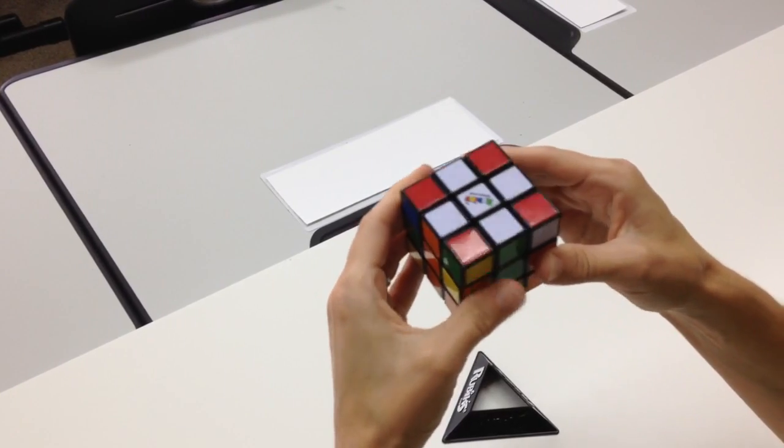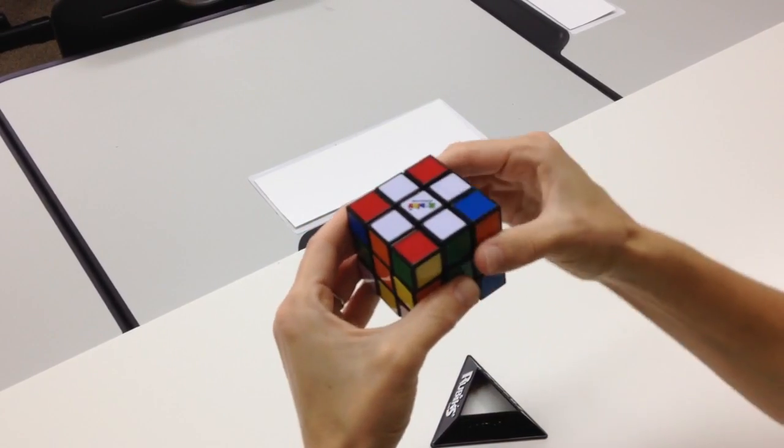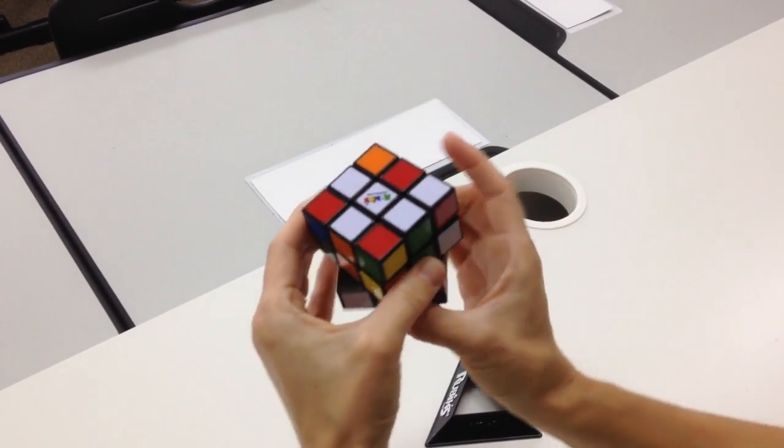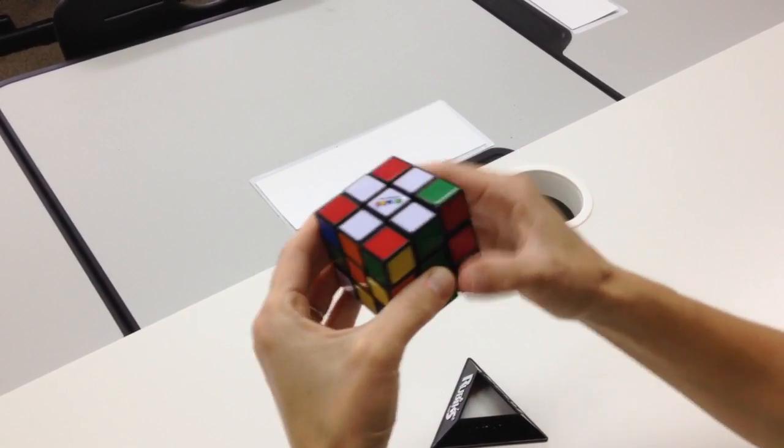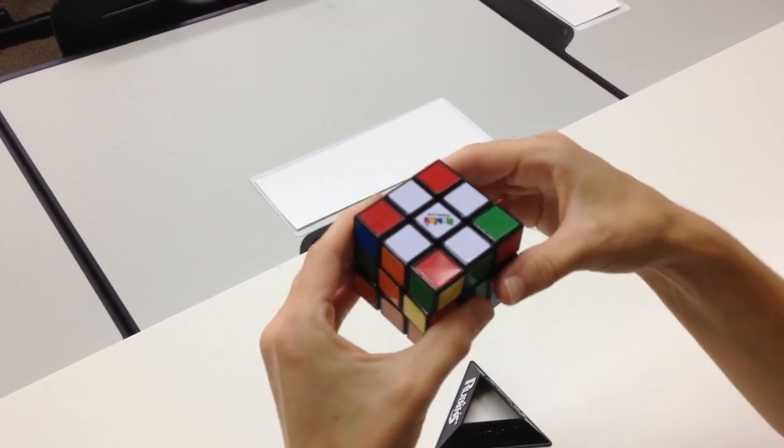So I'm going to do the sequence again. Right down, bottom left, right up, bottom right. Right down, bottom left, right up, bottom right. It's there, but it's not oriented correctly yet, so I do it again.